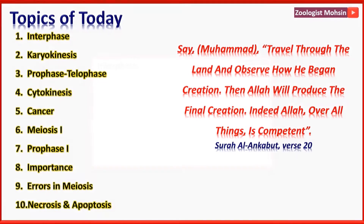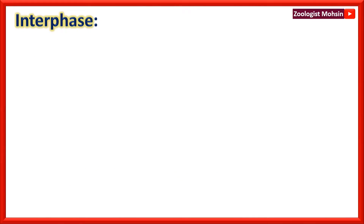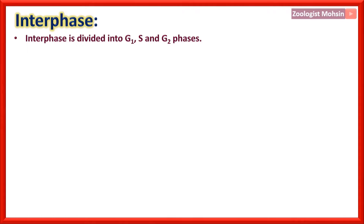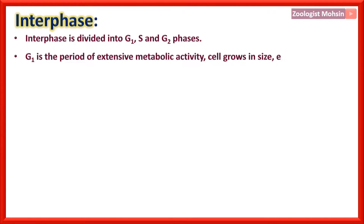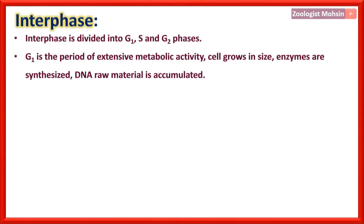Let's start. Interphase is divided into G1 (Gap 1), S (Synthesis), and G2 (Gap 2) phases. G1 is the period of extensive metabolic activities — the cell grows in size, enzymes are synthesized, and DNA raw material is accumulated or gathered.